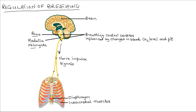This high concentration of carbon dioxide triggers the pons and the medulla oblongata to increase the rate of breathing. Through the nerve fibers, nerve impulses are sent to the diaphragm and the intercostal muscles but at a faster rate. The increased rate of breathing helps to increase the amount of oxygen in the blood, thereby meeting the demands of the increased tissue respiration.